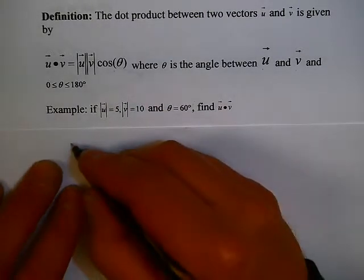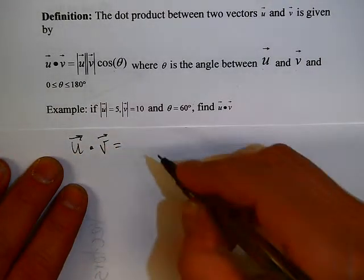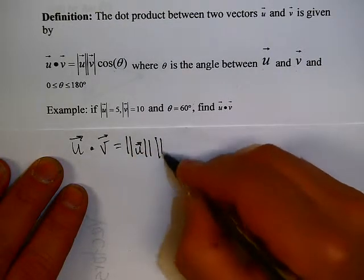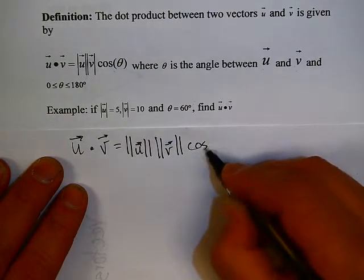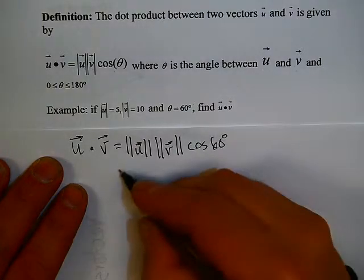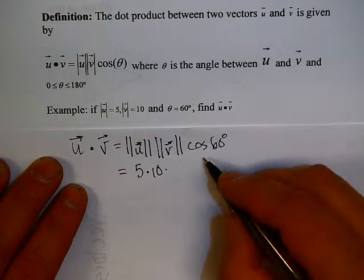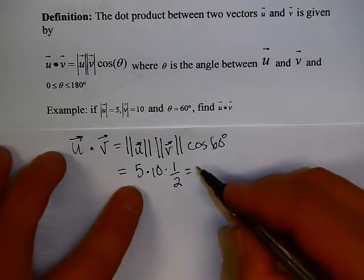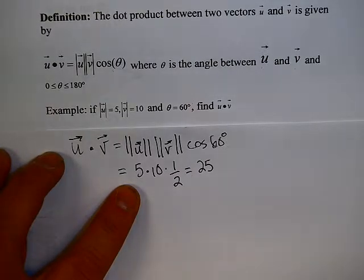For example, let's suppose that the magnitude of u is 5, the magnitude of v is 10, and theta is 60 degrees. What is u dot v? Well, u dot v equals the magnitude of u times the magnitude of v cosine of 60 degrees. The magnitude of u is 5, the magnitude of v is 10, and the cosine of 60 is one-half, so that's going to be 25.